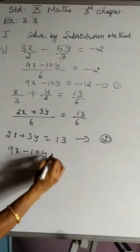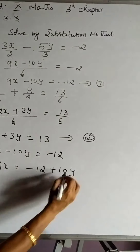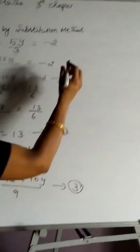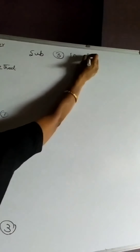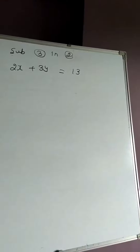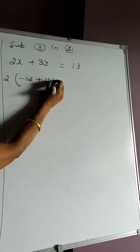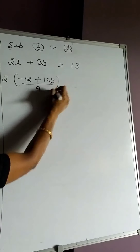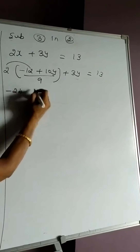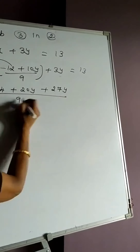From the first equation I find the x-form. So 9x = −12 + 10y, therefore x = (−12 + 10y) / 9, which is equation 3. Substituting equation 3 in the second equation, 2x + 3y = 13: in the place of x we substitute, giving 2 × (−12 + 10y)/9 + 3y = 13. Multiplying out: (−24 + 20y)/9 + 3y = 13, which gives (−24 + 20y + 27y) / 9 = 13.